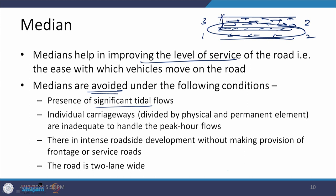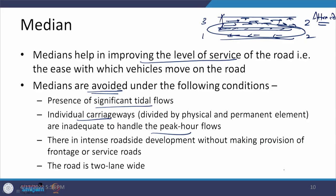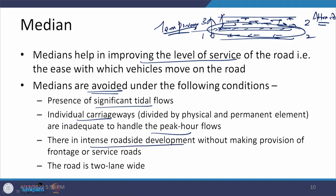Another case to avoid medians is when individual carriageways divided by physical and permanent elements are inadequate to handle peak flows. If the traffic in a particular direction — say 3,000 vehicles per hour — exceeds what the lane can handle, say 2,000 vehicles per hour, then providing a physical or permanent median is not a good idea. A temporary median which can be shifted to either direction depending on demand is preferable.